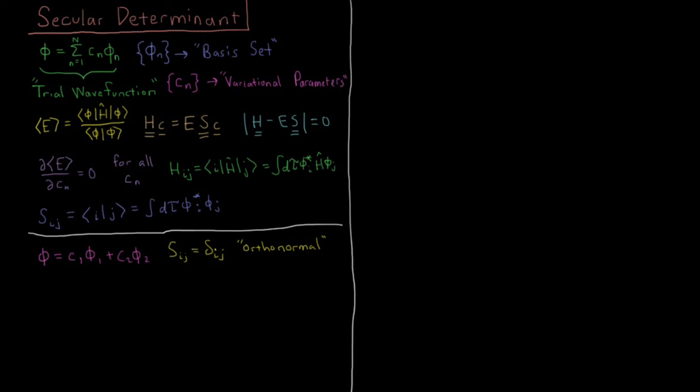We're now going to look more into the linear variational method and the secular determinant for a more specific case. So to remind ourselves about the linear variational method, we've got some trial wave function, which is a linear combination of these basis functions φn times a linear coefficient cn, and the sum of all these is our total trial wave function.